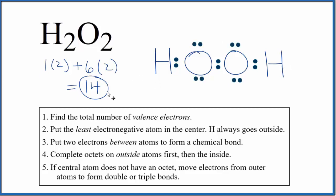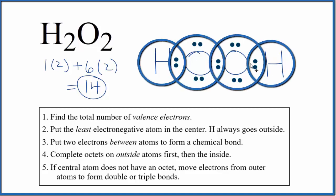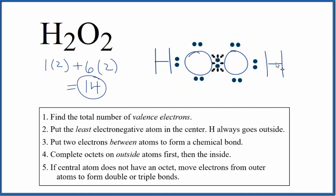At this point, we've used all 14 of our valence electrons. Each hydrogen has two. And then the oxygen atoms, they each have eight. So their octets are full. The electrons between atoms are shared. Those are the covalent bond.